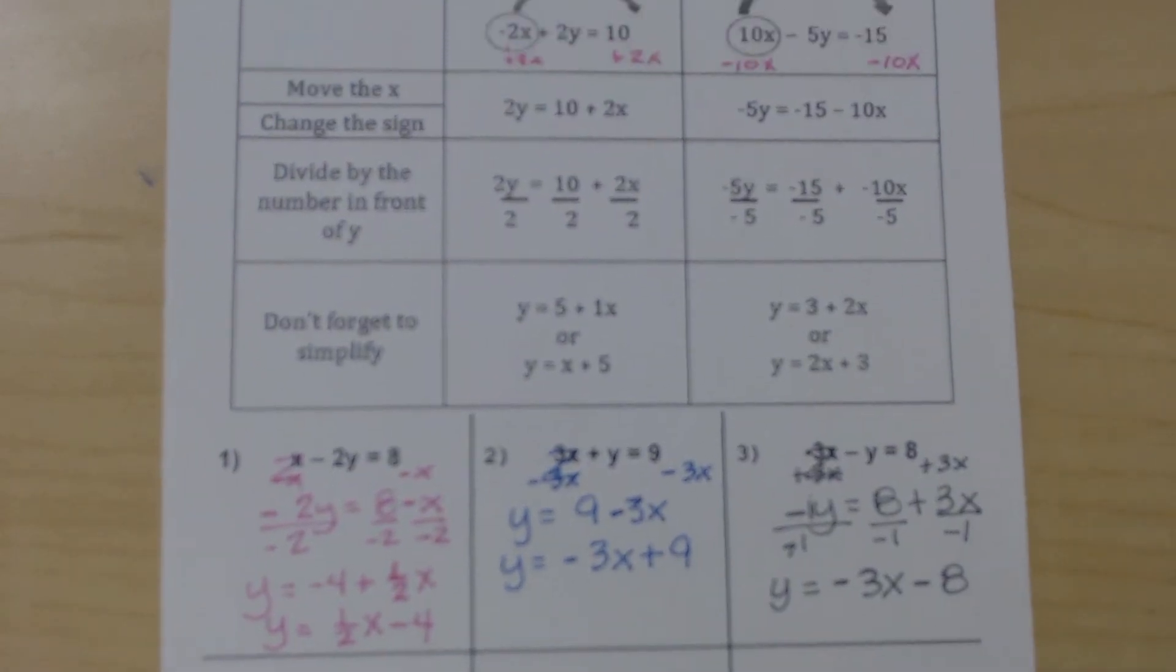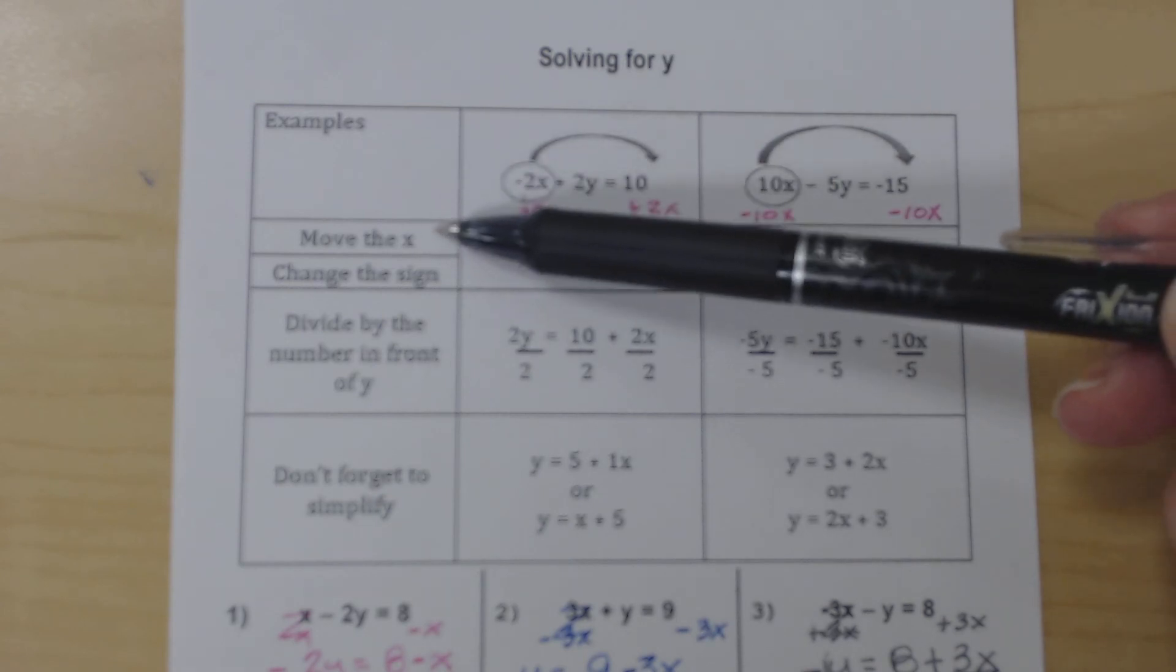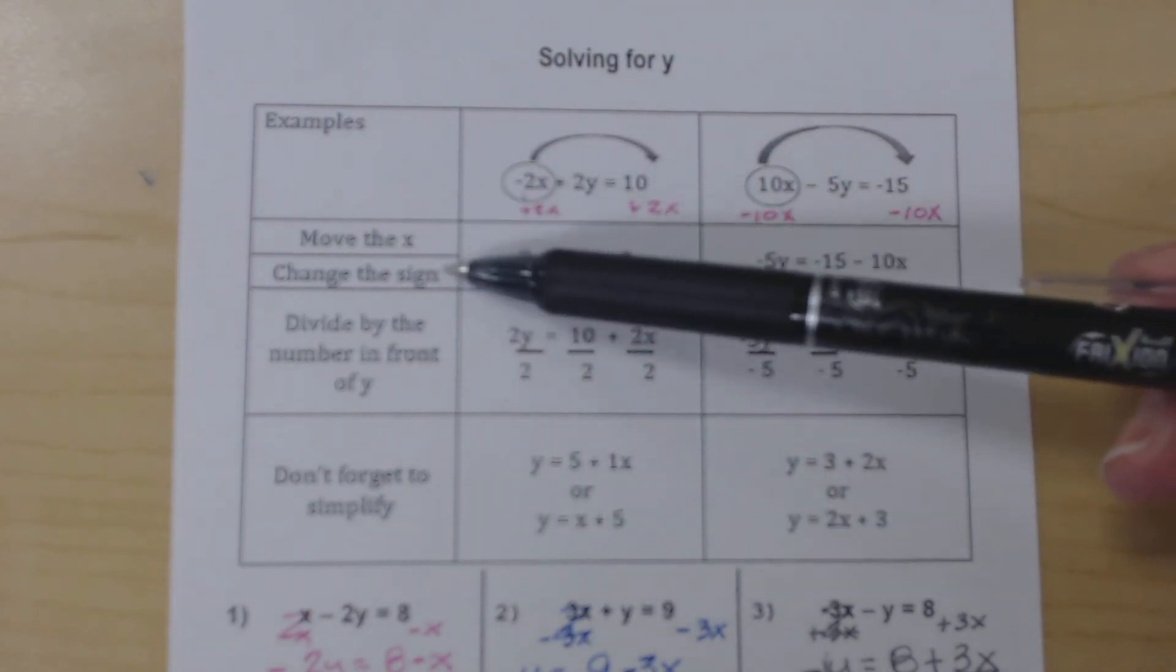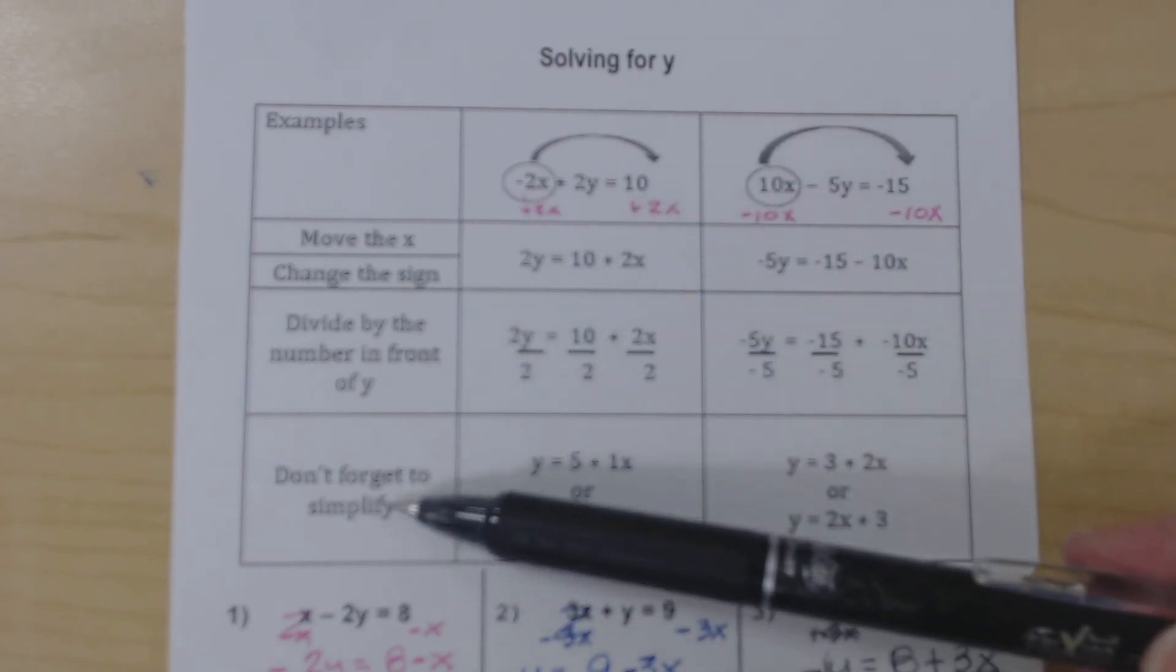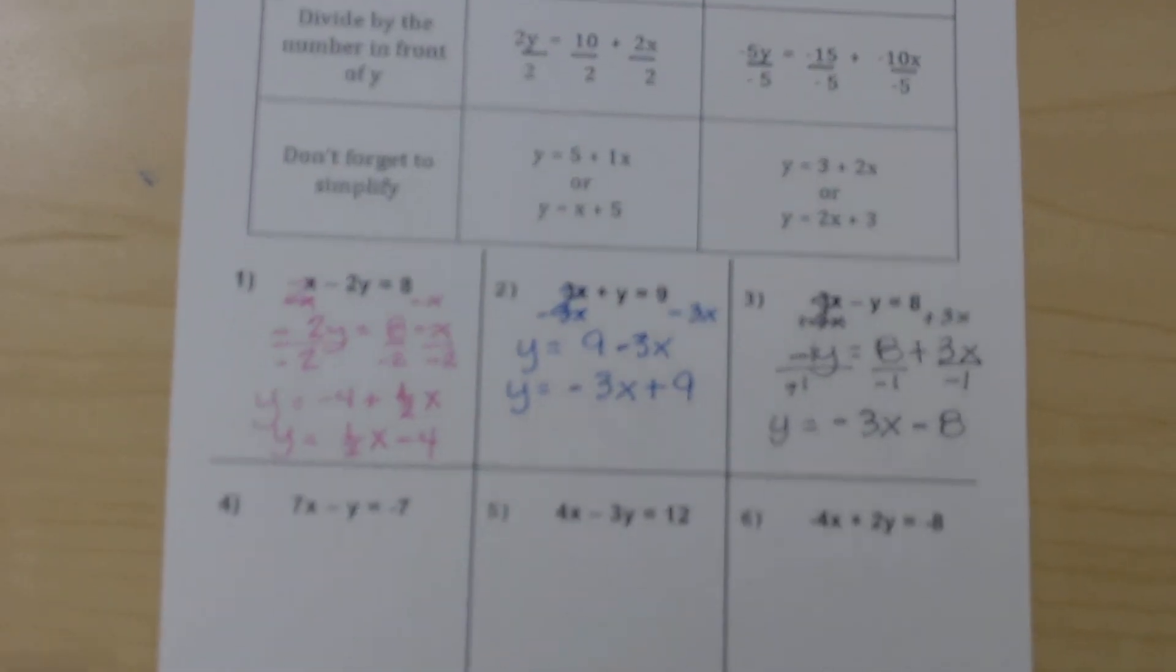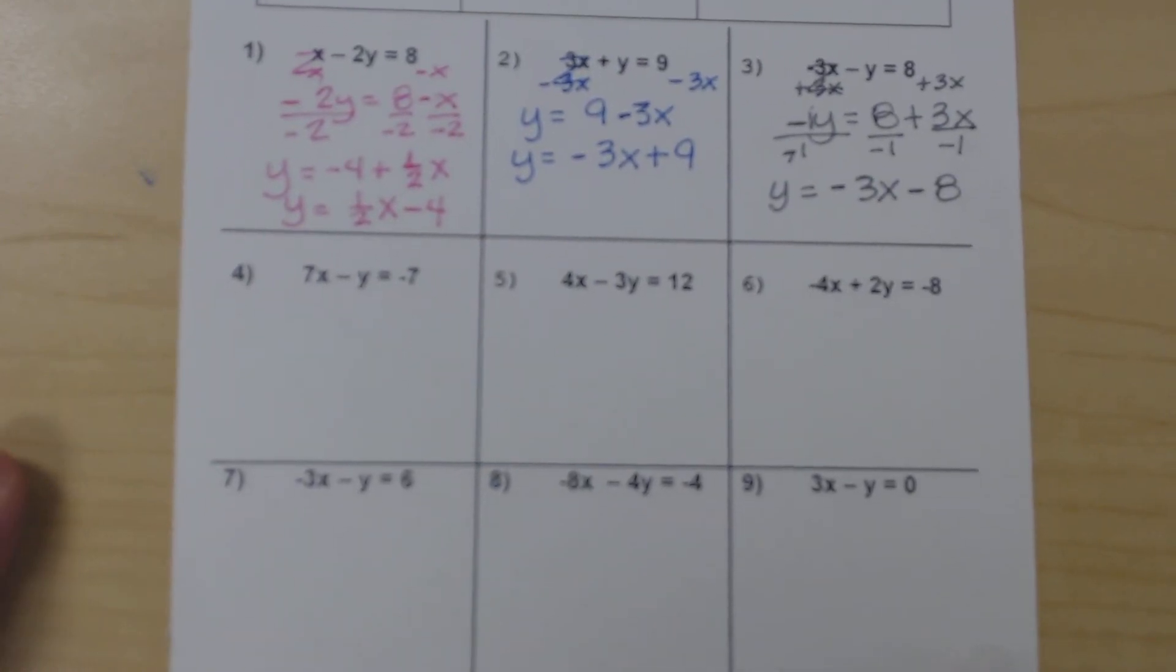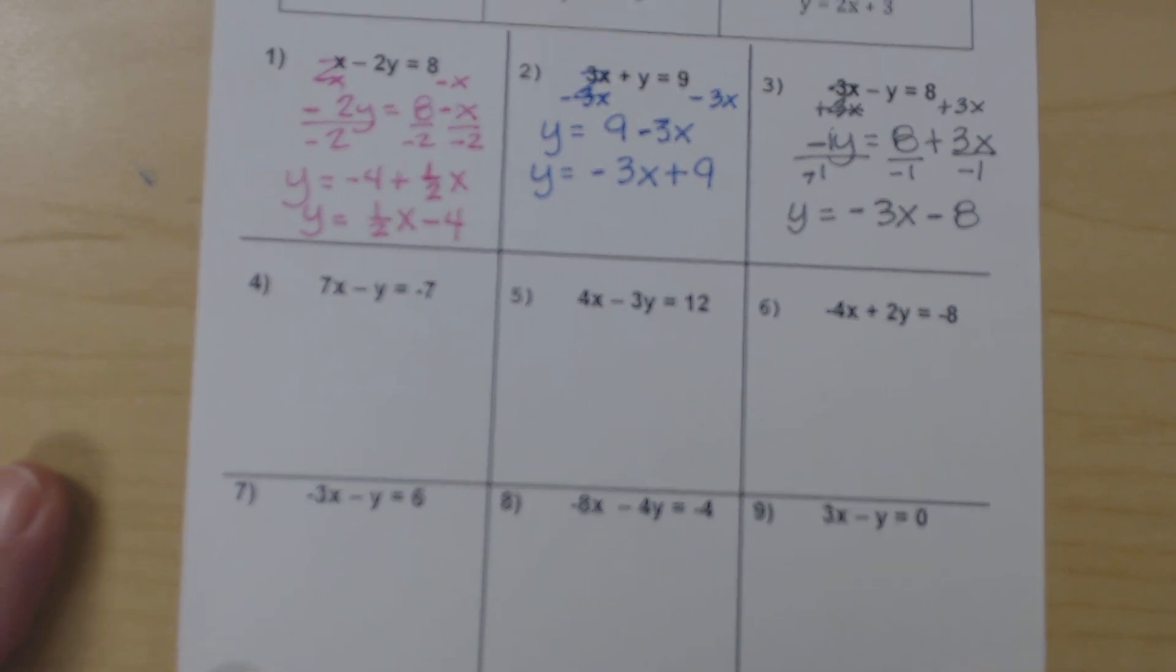So here we have our examples up at the top with our words to our chant. Move the x, change the sign. Divide by the number in front of the y. And don't forget to simplify. And then 3 examples. Please have the other 6 items done to the best of your ability and have questions when you come to class.